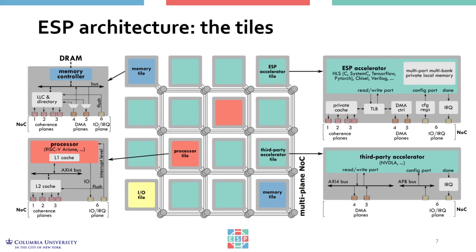The accelerator socket takes care of accelerator configuration through memory-mapped registers, address translation, DMA transfers, interrupt handling, and cache coherence. Normally, the accelerator socket hosts an accelerator generated with one of the available ESP design flows. Additionally, a third-party accelerator with an AXI-4 interface can still be integrated into an ESP accelerator socket.